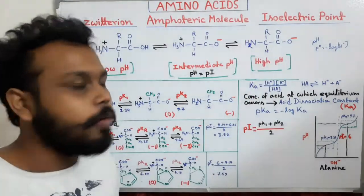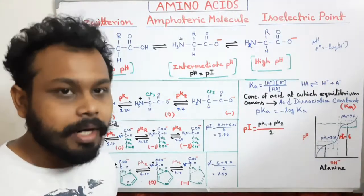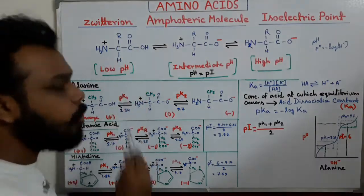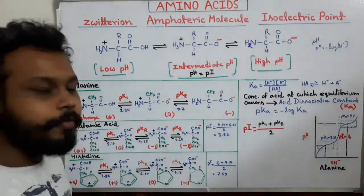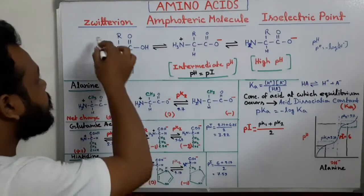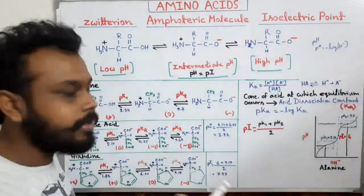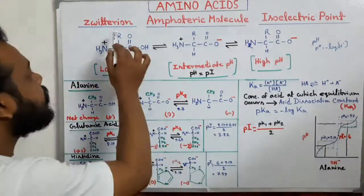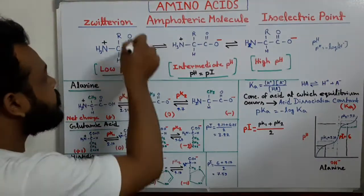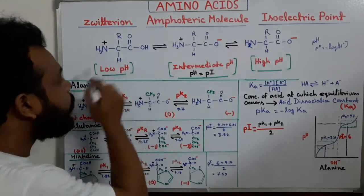First we have to know the dissociation of amino acid in solution like water — how amino acid dissociates in solution. In low pH, the basic structure of amino acid has a COOH group, an NH3+ group, and an R group which is variable in different amino acids. R represents the side chain of the amino acid. This is the basic structure of any amino acid at low pH.